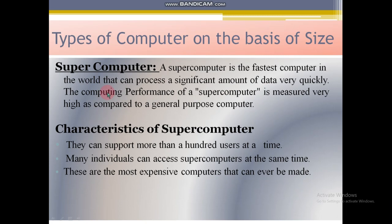Common people don't use supercomputers — they are used for weather forecasting, rocket shuttle operations, and other high-level purposes. The characteristics of a supercomputer are: they can support more than 100 users at a time; many individuals can access a supercomputer at the same time; and these are the most expensive computers ever made. A simple person cannot afford one, and it is basically not permitted by the government either.